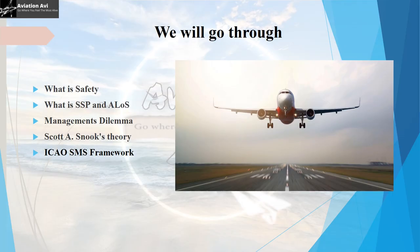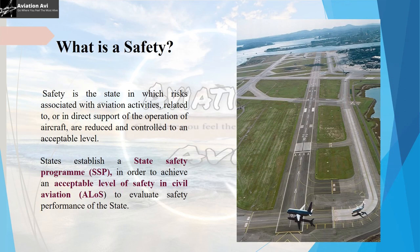This video will give you a basic idea of what SMS is. We will go through what is safety, what is the State Safety Program (SSP) and how it defines the acceptable level of safety (ALOS), and what are the management dilemmas while dealing with safety. We will also go through Scott A. Snook's theory and the ICAO SMS framework. The first question is: what is safety? Safety is the state in which risks associated with aviation activities related to or in direct support of the operation of aircraft are reduced and controlled to an acceptable level.